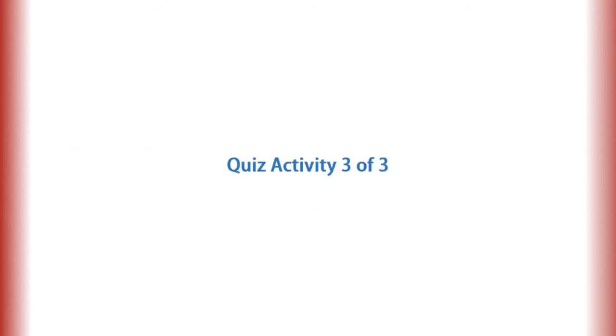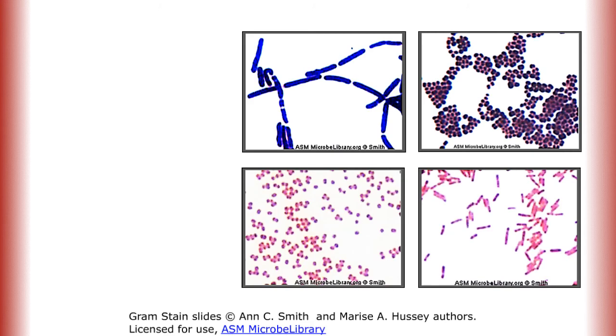And lastly, in this set of questions, you'll choose the correct description on the left that matches its corresponding gram stain structure on the slides on the right. Again, you can always pause the video if you need more time to think about it. Gram-positive cocci in clusters.